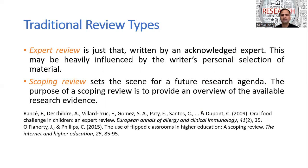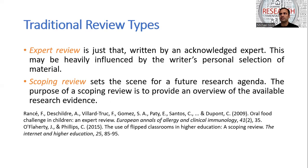Scoping review sets the scene for a future research agenda. Its purpose is to provide an overview of available studies and how these studies can be used in future research, so that the body of knowledge develops in that particular domain. For instance, the use of flipped classrooms in higher education — a scoping review — where they reviewed the use of flipped classrooms and set the future research agenda for how the body of knowledge should advance in this domain.